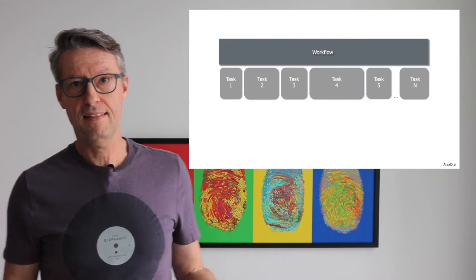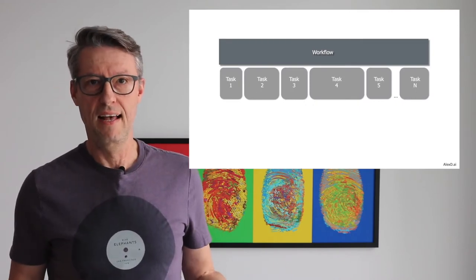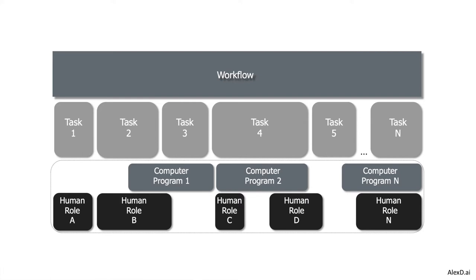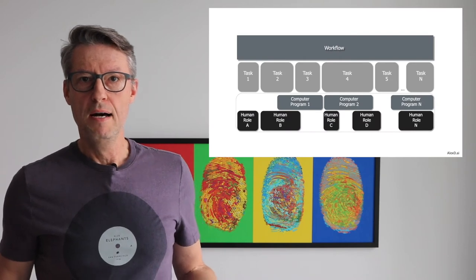Let me help you better understand where you can find these situations. Everybody is working on top of workflows, and workflows can be divided into tasks. For example, in a bank, the process to open a new account involves a workflow. Part of this workflow is done by humans — like a banker managing the client relationship at the branch — and part of the tasks are completed entirely by computer programs.